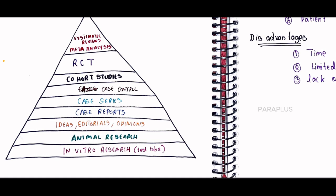RCT — Randomized Control Trial. You randomly select a group of population, and they are randomly assigned: they will be given a drug or not given a drug. Then we get results. This is RCT — it is the gold standard study. That is why we get a good result.